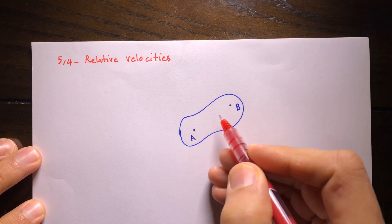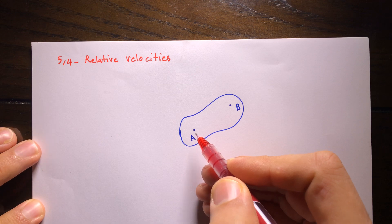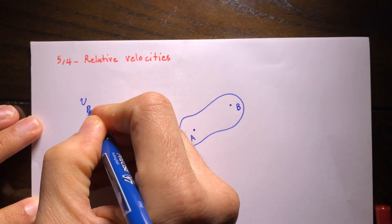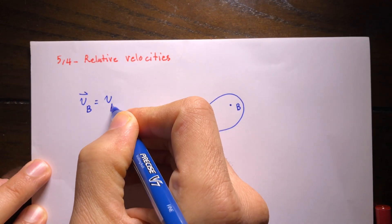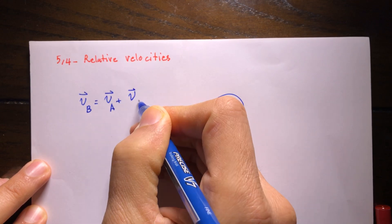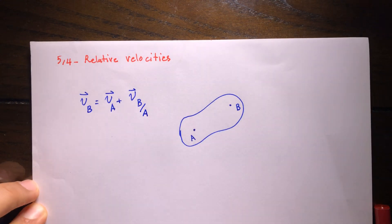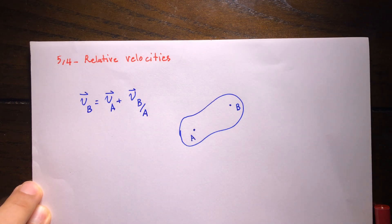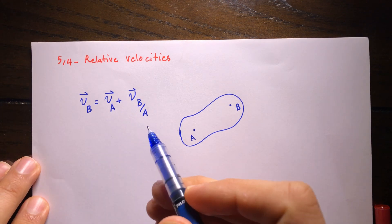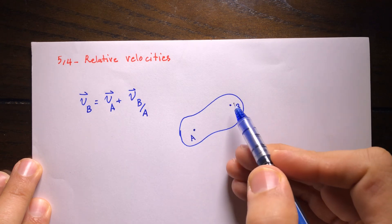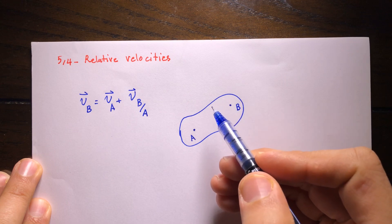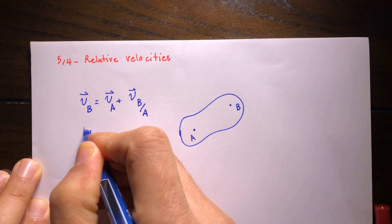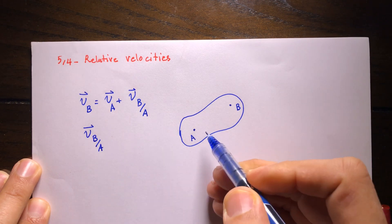Based on the equations from Chapter 3 for relative velocity between two arbitrary points, the velocity of B equals the velocity of A plus the relative velocity of B with respect to A. This is true for any two points — they don't have to be on the same rigid body. But this equation becomes especially important when we choose both points on the same rigid body.